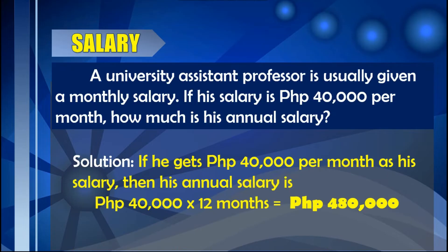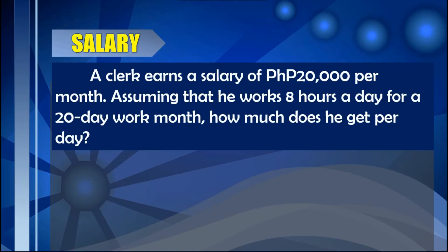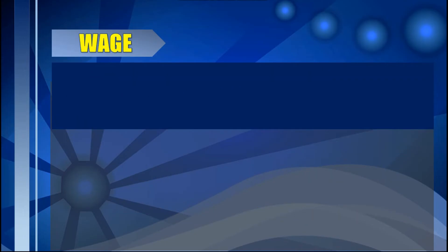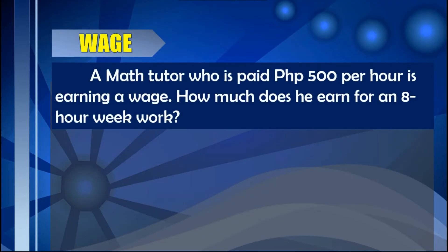Next problem: A clerk earns a salary of 20,000 pesos per month. Assuming he works 8 hours a day for a 20-day work month, how much does he get per day? Since he earns 20,000 per month, his daily rate is: 20,000 ÷ 20 days = 1,000 pesos per day.